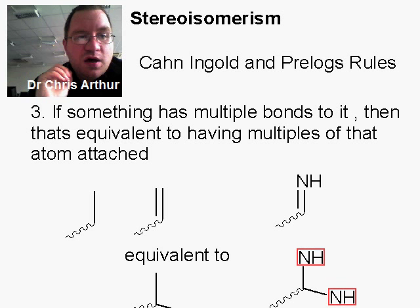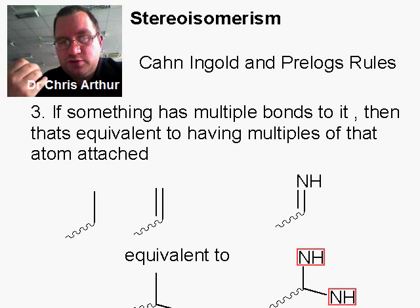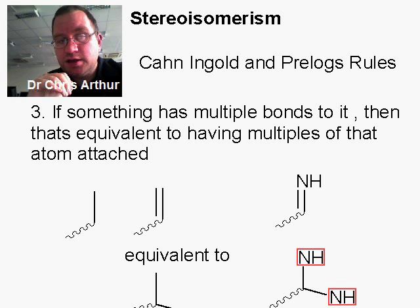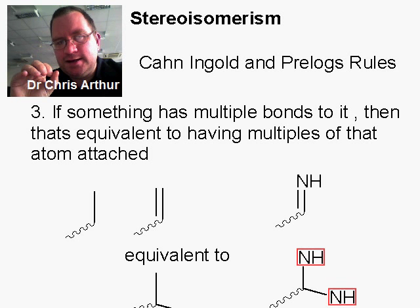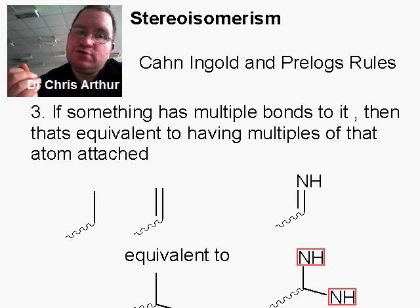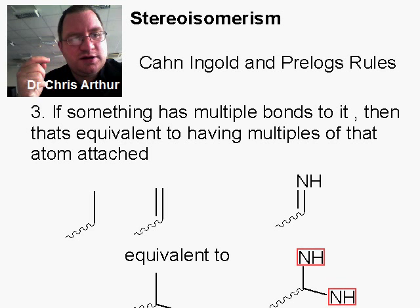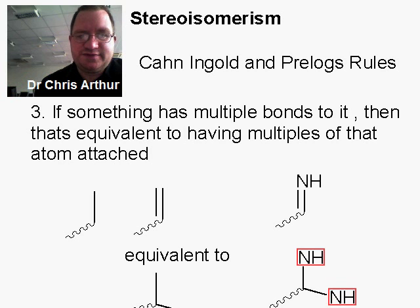Those are Cahn-Ingold-Prelog's three rules. What we can now do with these rules is start to assign importance — and I'll use these rules to assign the stereoisomers of double bonds, and the stereoisomers of carbons which have four different groups attached. That will be covered in the next videos.